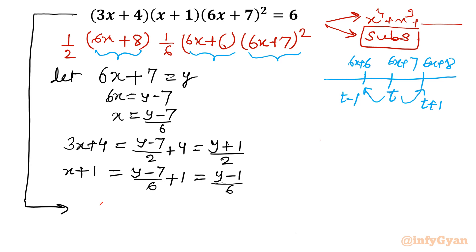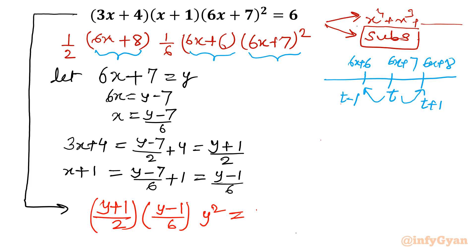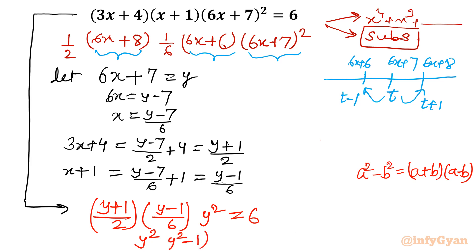Putting the values in, our equation becomes [(y + 1)/2] × [(y − 1)/6] × y² = 6. Multiplying both sides by 12, we get y² × (y + 1)(y − 1) = 72. Applying the difference of squares identity, this becomes y² × (y² − 1) = 72.